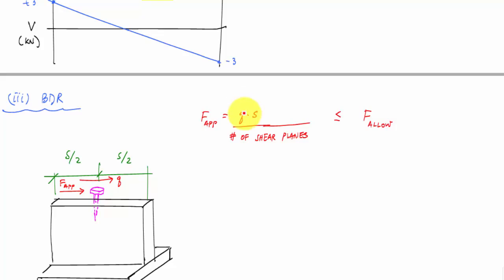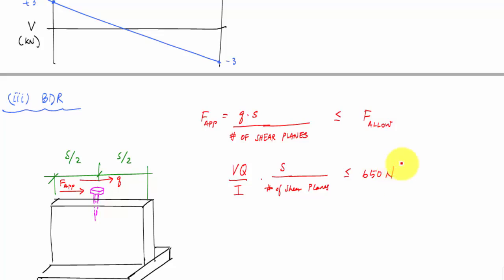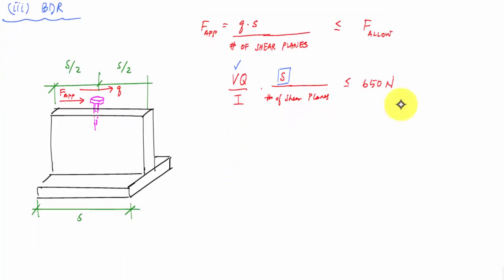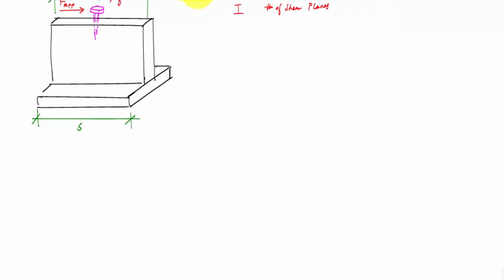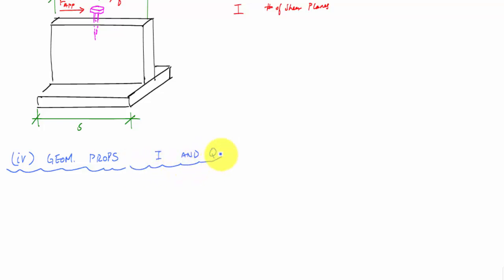So what do we know? We know V, and F_allow = 650 N. We're solving for spacing s. The number of shear planes depends on how we define Q. We can calculate the moment of inertia of this I-shaped cross section and the first moment of area Q. These are the key geometric properties.